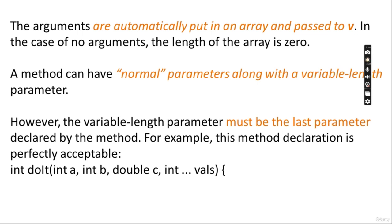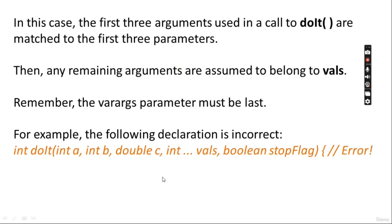A method can have normal parameters along with a variable length parameter. However, the variable length parameter must be the last parameter declared by the method. You can have a combination of fixed-length parameters plus a variable number of arguments. For example, a 'doIt' method having one compulsory integer parameter, another integer parameter, a double parameter, and then integer variable arguments — this syntax is acceptable. The first three arguments match the first three parameters; any remaining arguments are treated as variable parameters.